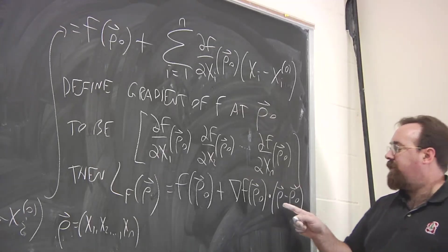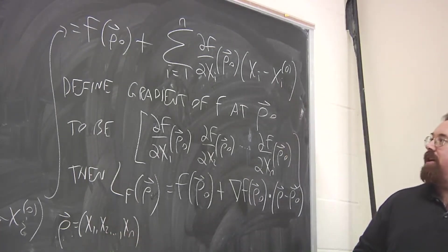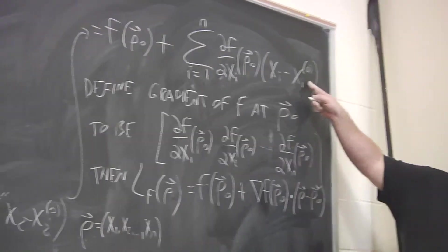dot product with the difference of these vectors, p minus p naught. So the difference between this general point in n-dimensional space and the point around which we're linearizing.